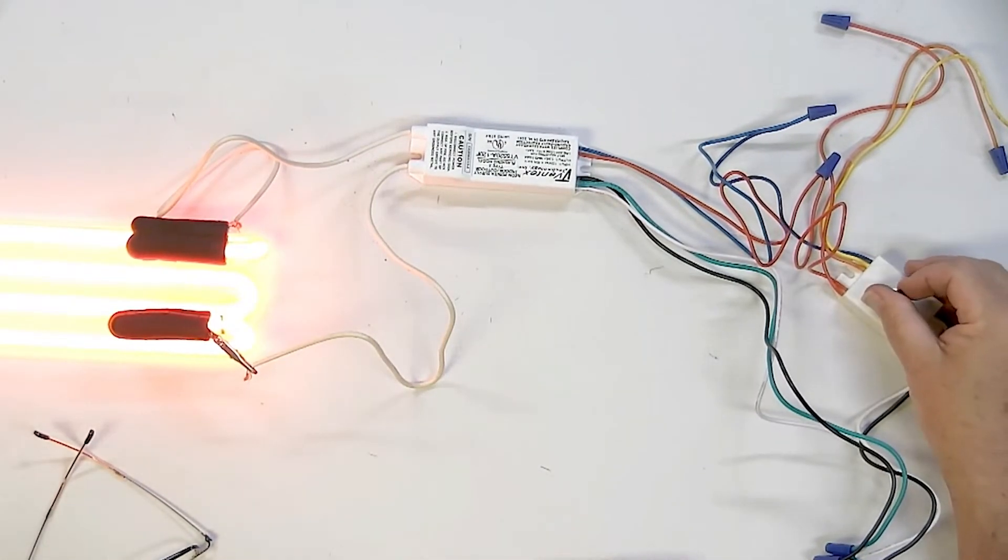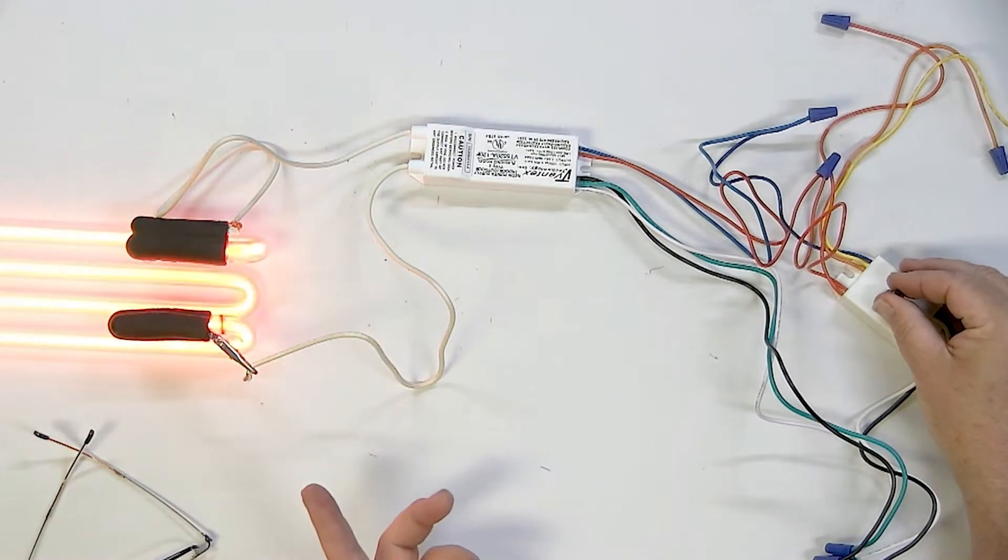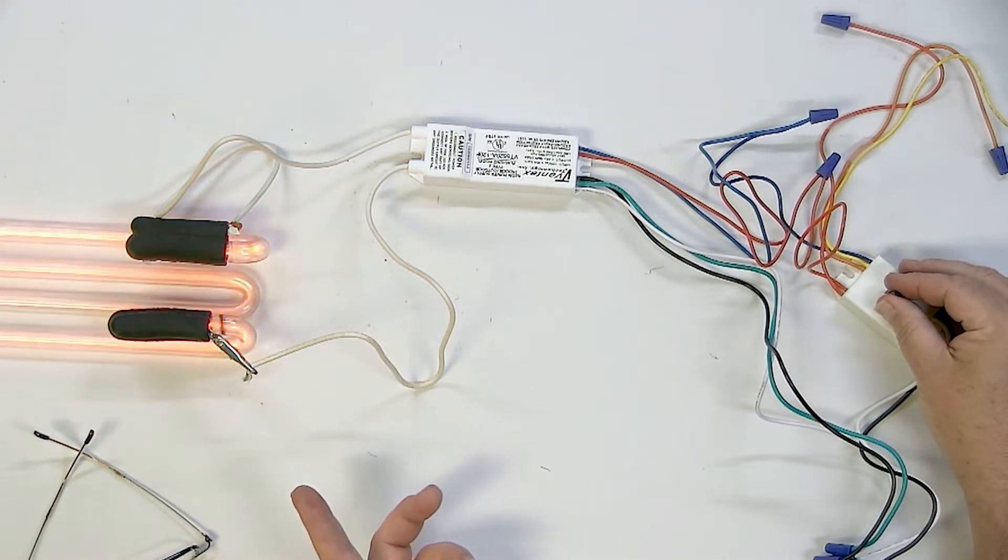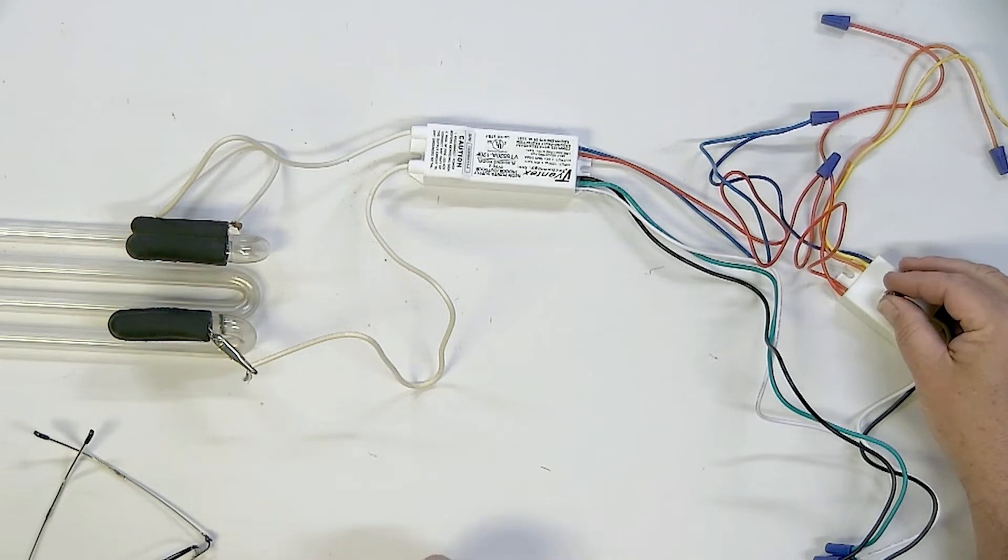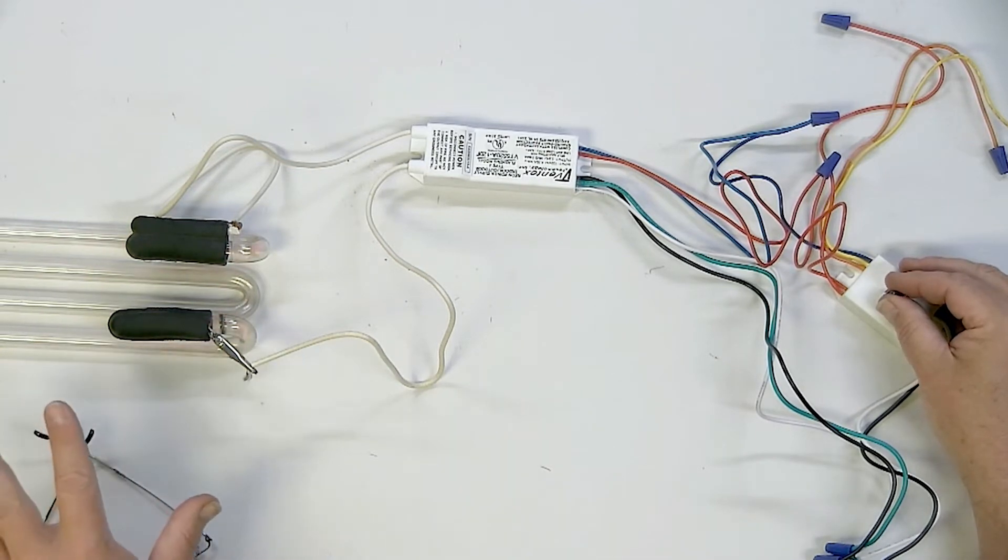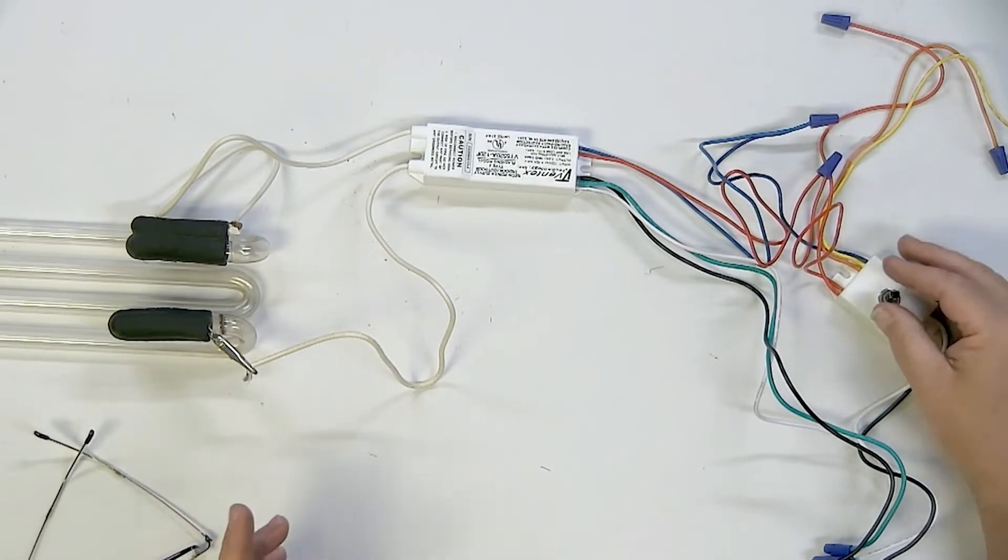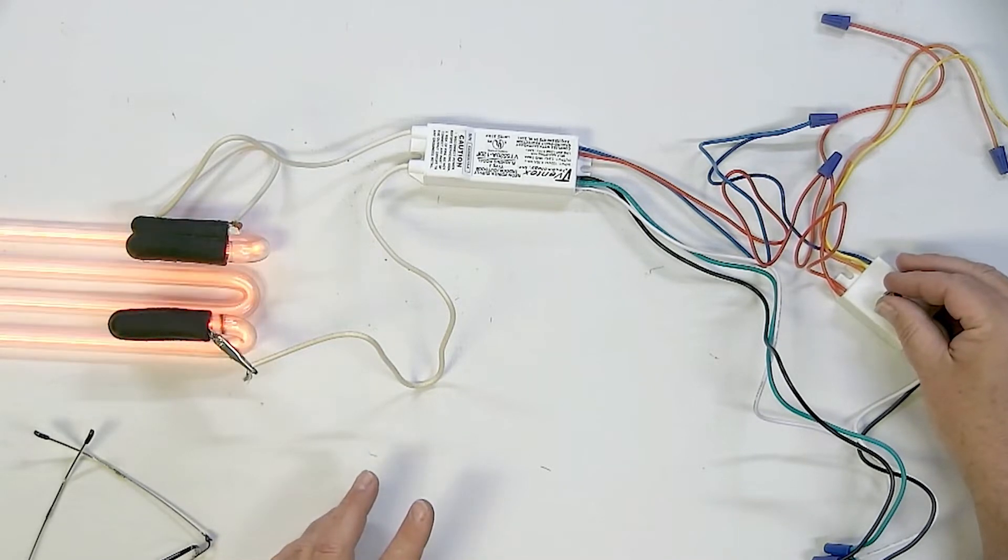and here we have, even with the red tube, we have a full range dimmer down to there. Worked great with a coated tube where you couldn't see that little fluttering as you get to the end. But it dims all the way down and all the way back up.